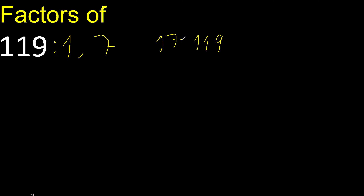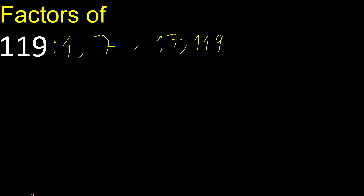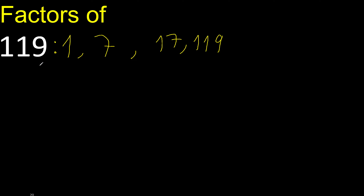119 divided by 7 is 17. Here, 17 is a prime number, therefore we finish. The factors are 1, 7, 17, and 119.